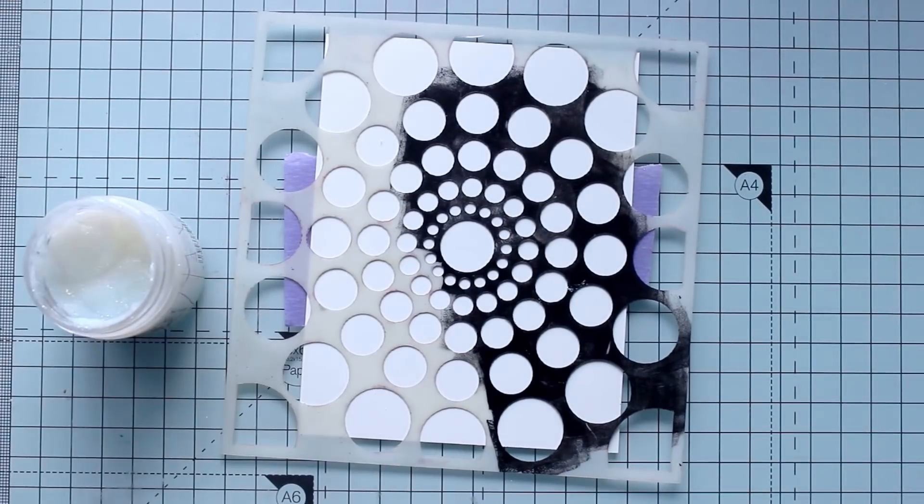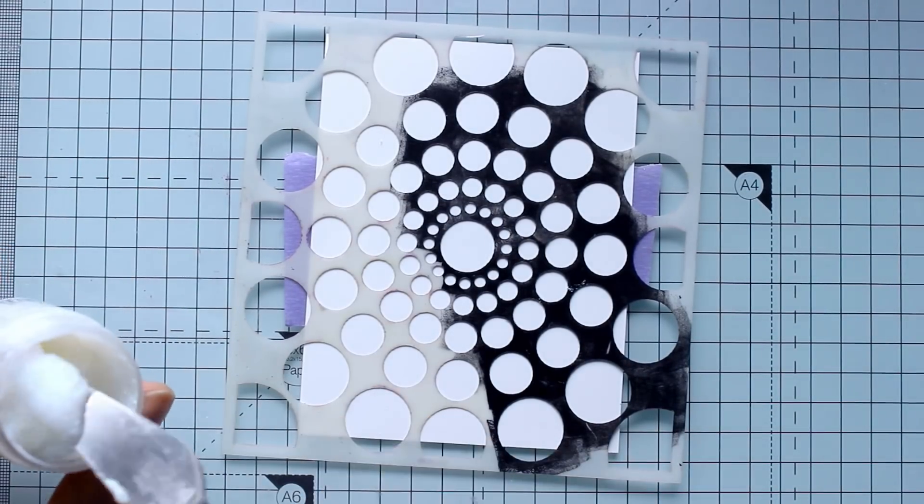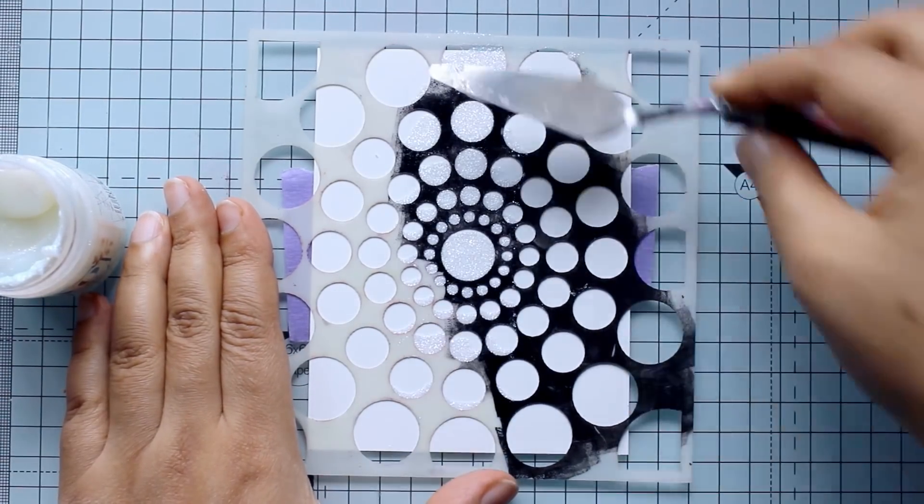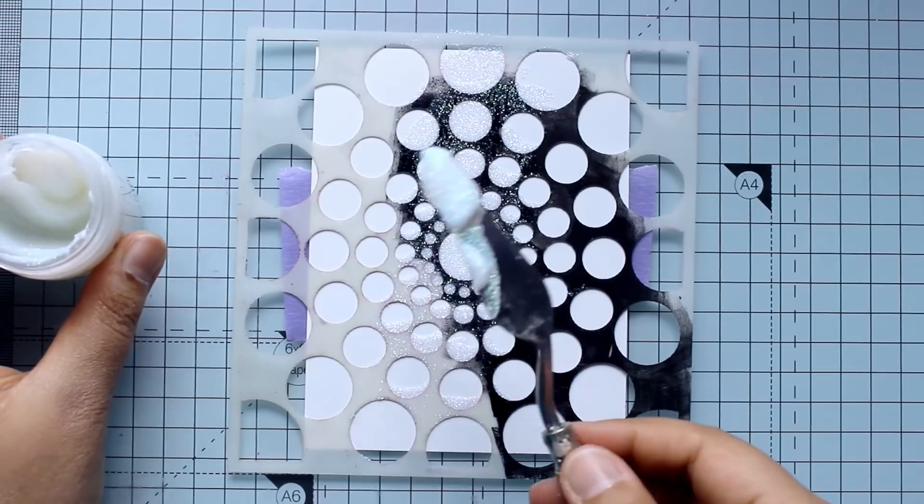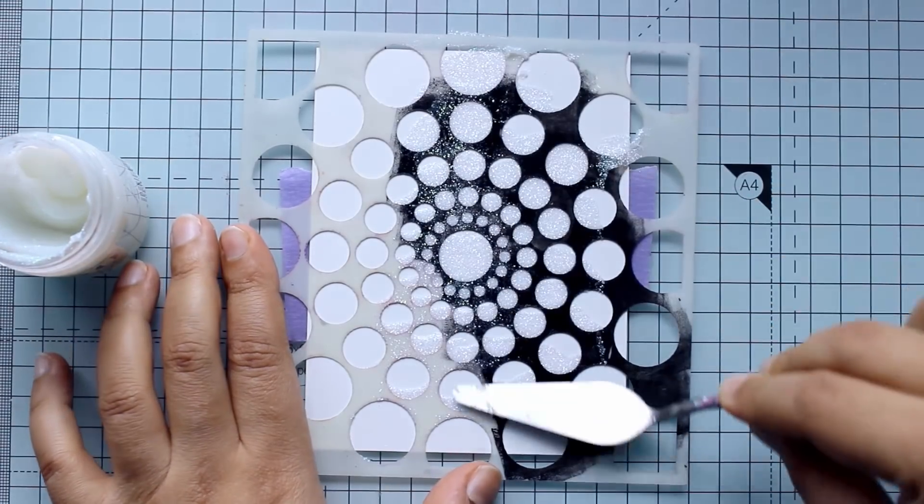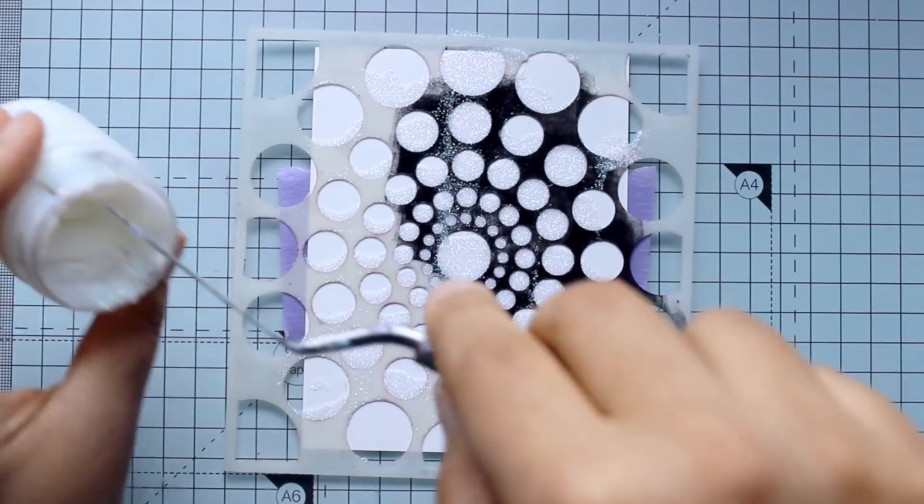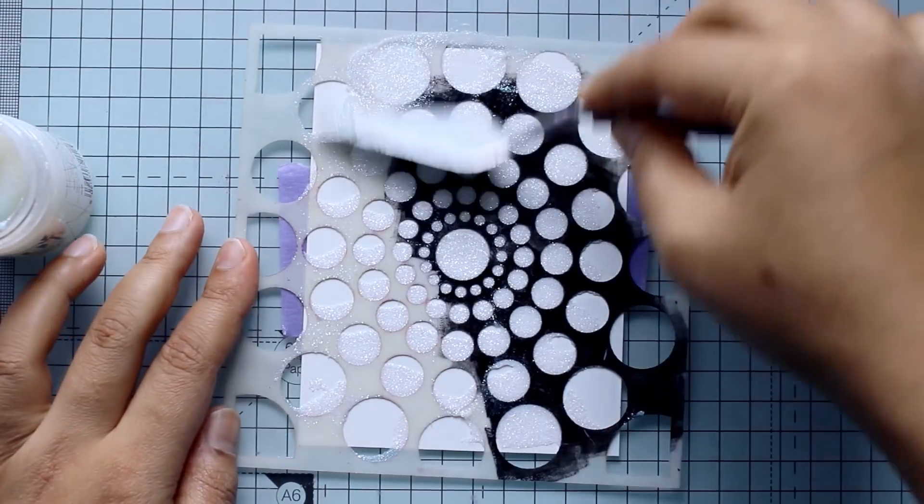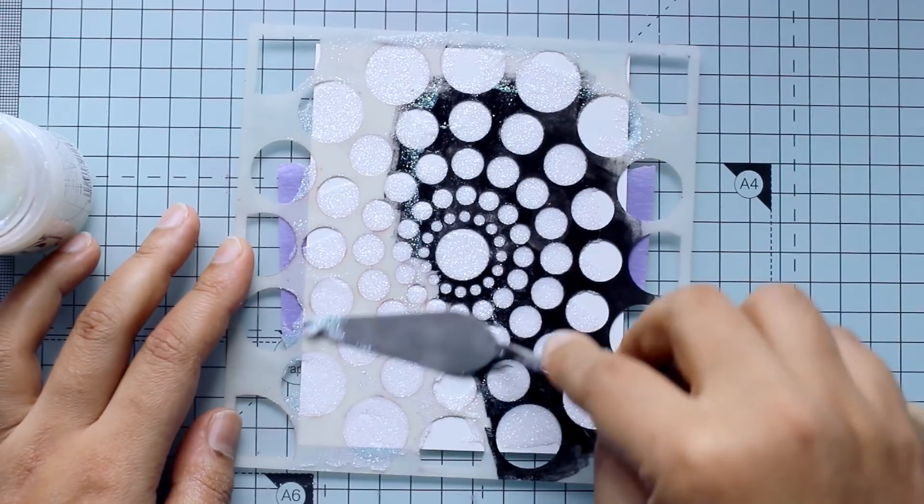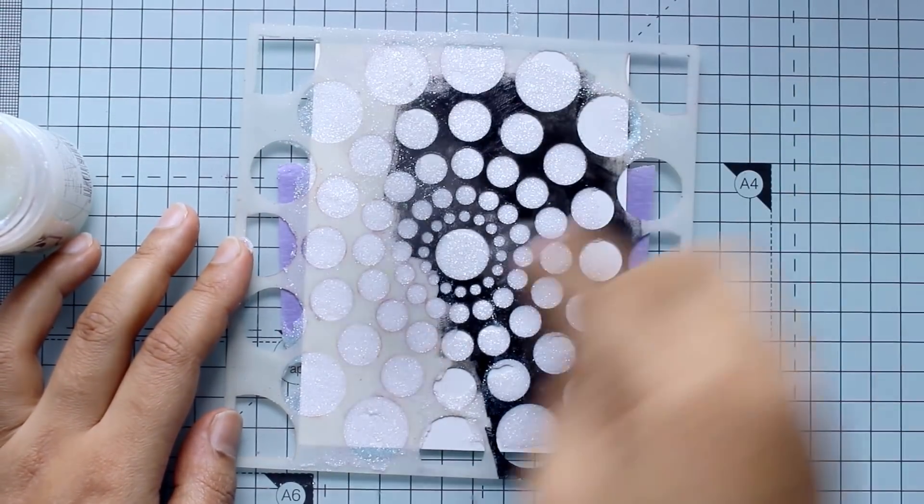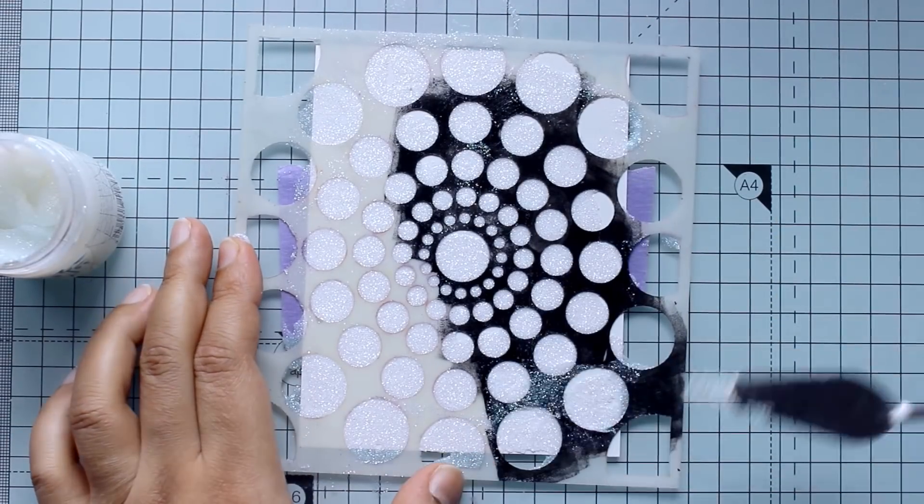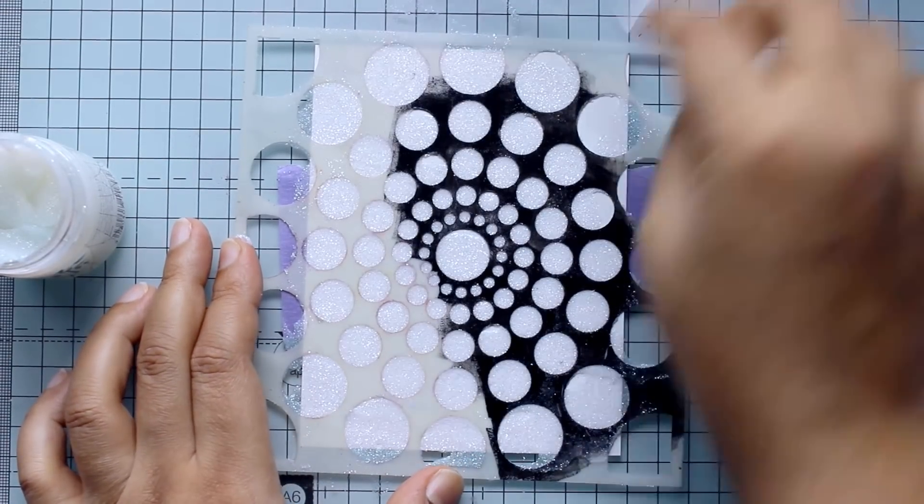I've got an older Crafters Workshop stencil here and I am particularly fond of these mandala style designs. I am applying the glimmer paste to the stencil which I've temporarily stuck down on a piece of craft plastic sheet.